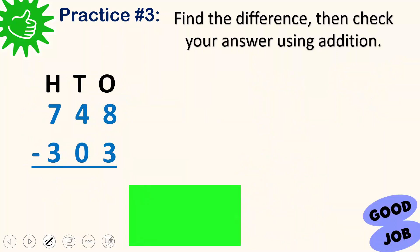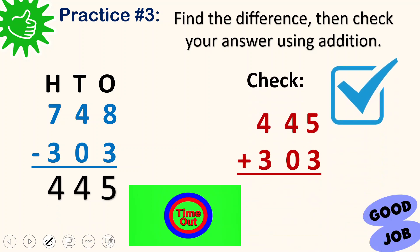Let's have the last practice. 748 minus 303. Go! 8 minus 3 is 5. 4 minus 0 is 4. 7 minus 3 is 4. Yay! Let's check. We add 445 and 303. 5 plus 3 is 8. 4 plus 0 is 4. And then 4 plus 3 is 7. Yay! They are the same. Very good, children.